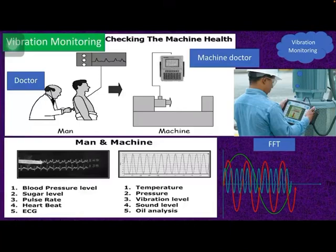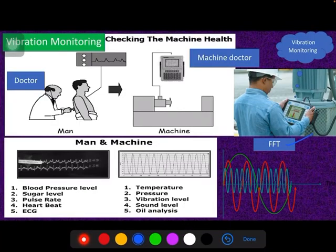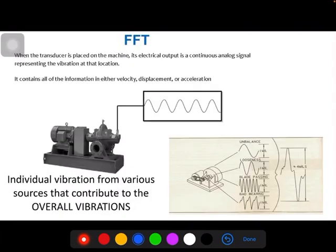Today I am going to discuss the fundamental topic: FFT. FFT is nothing but Fast Fourier Transform. When a transducer is fixed over any machinery component, it produces an electrical output — a continuous analog signal. We call it a sine wave, and it represents the vibration at that location. This sine wave contains all the information, whether velocity, displacement, or acceleration vibration.